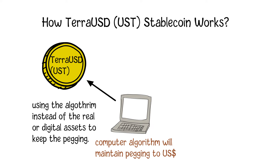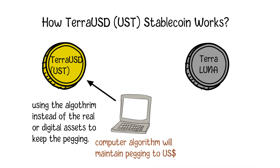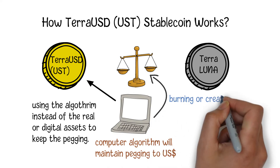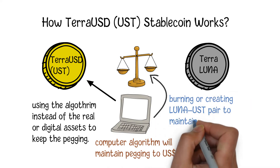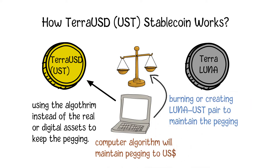UST is connected to its native token LUNA. The code working in the background is responsible for burning or creating the LUNA-UST pair to maintain the price of these tokens. When one UST is created, one dollar of LUNA will be burned, and it also works the other way around — LUNA creating and UST burning.